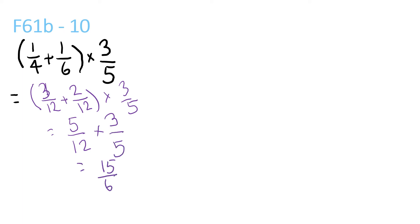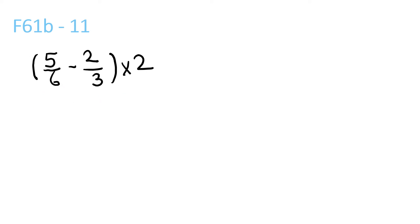15 over 60, which can be simplified to 1 over 4. Brackets 5 over 6 minus 4 over 6, brackets times 2.